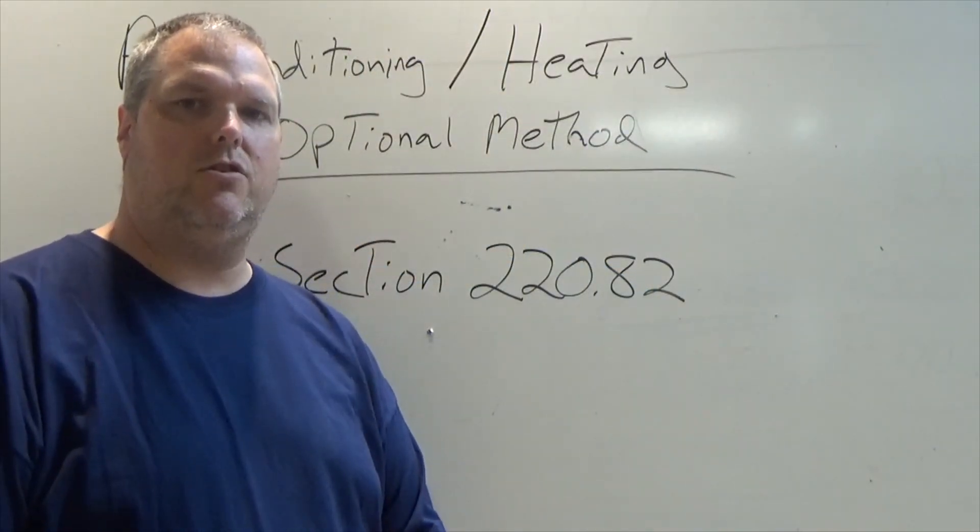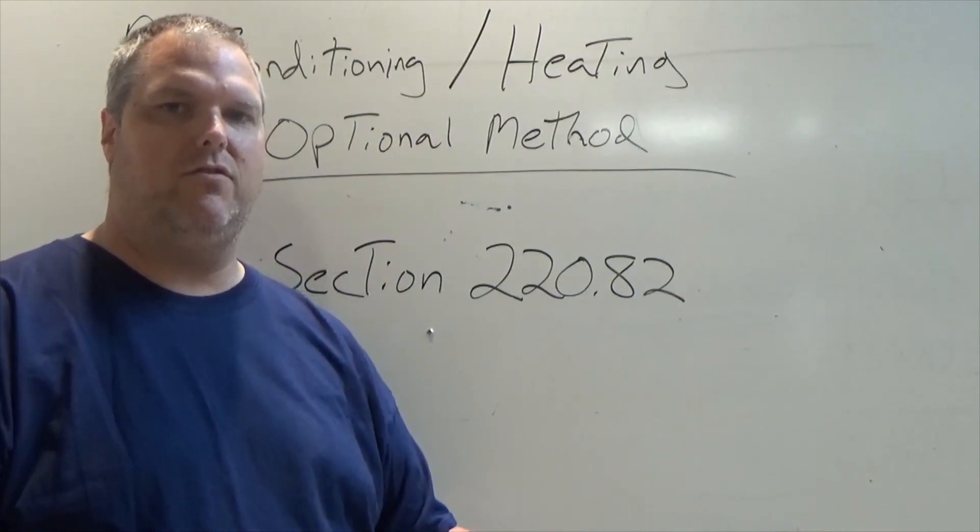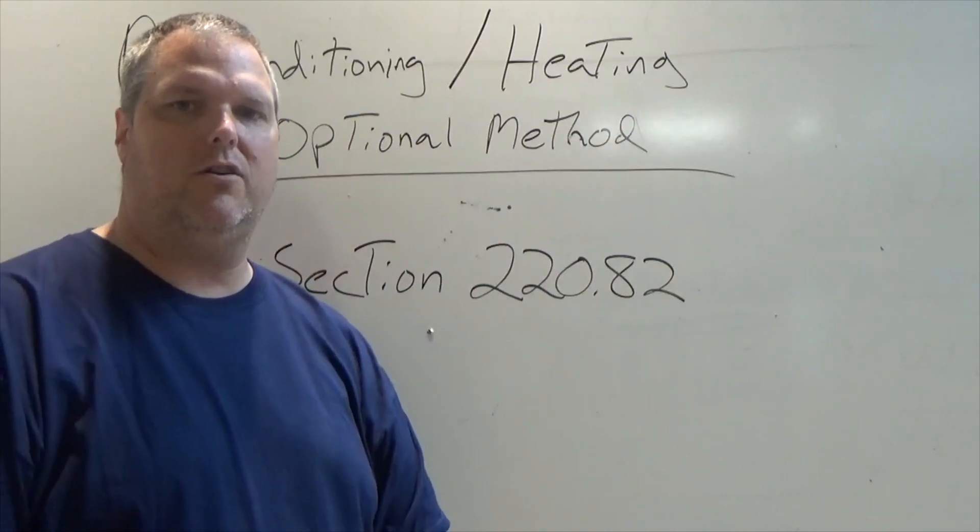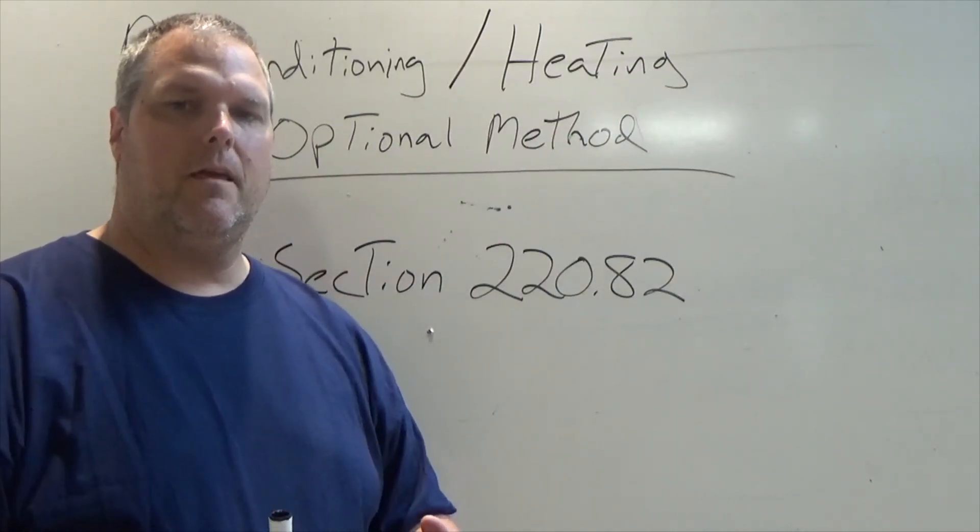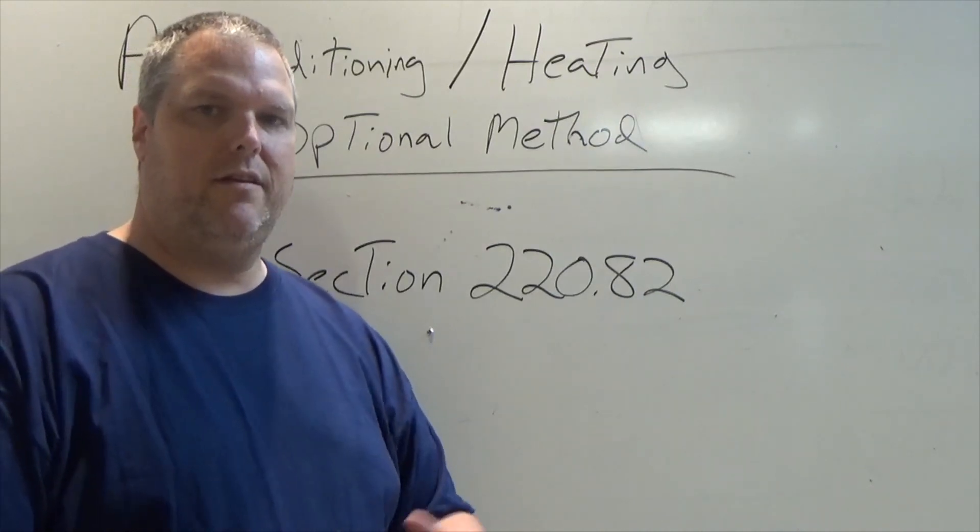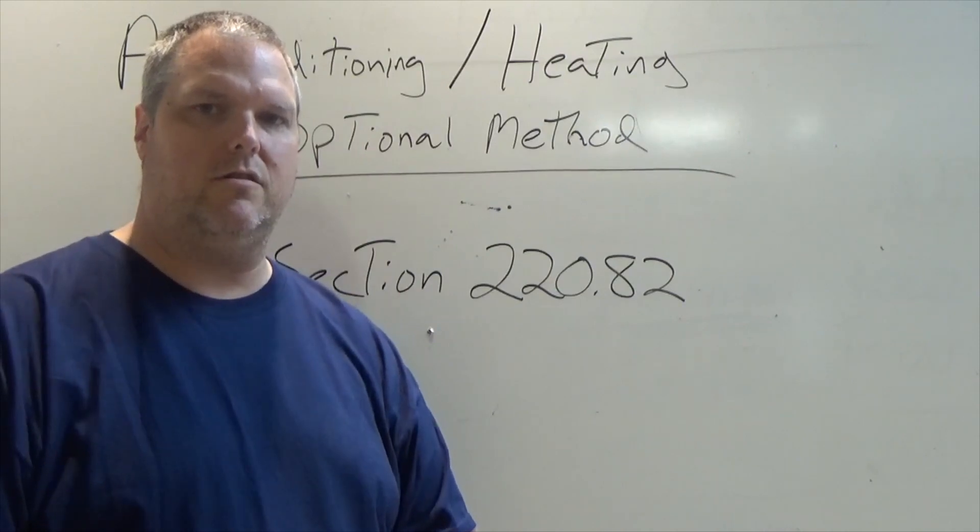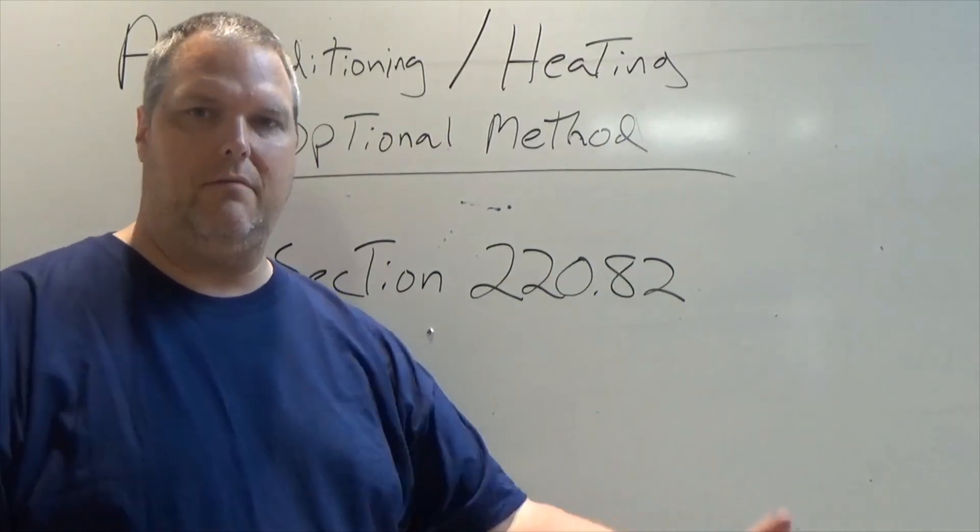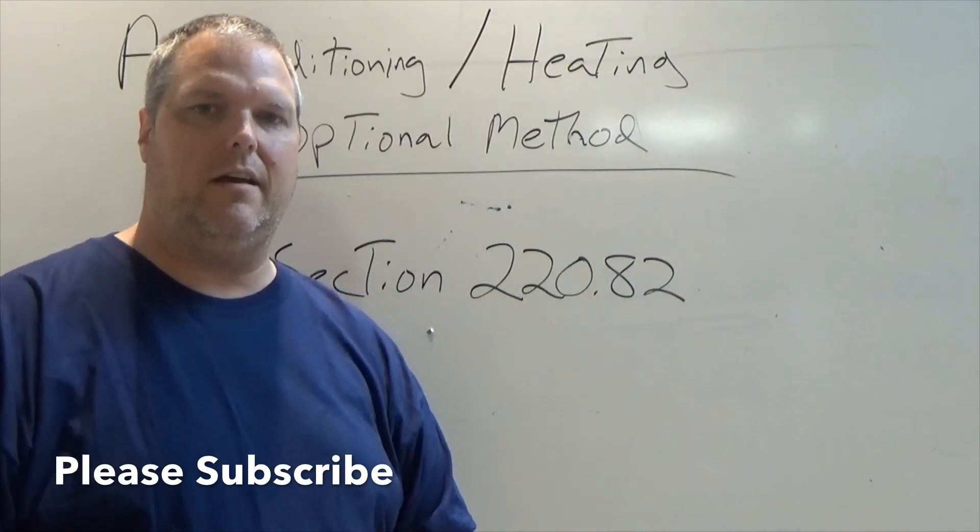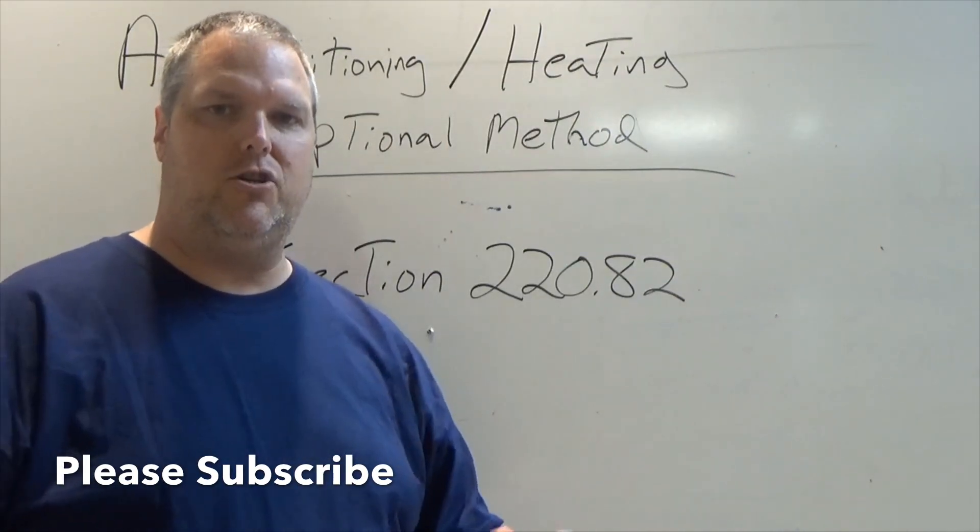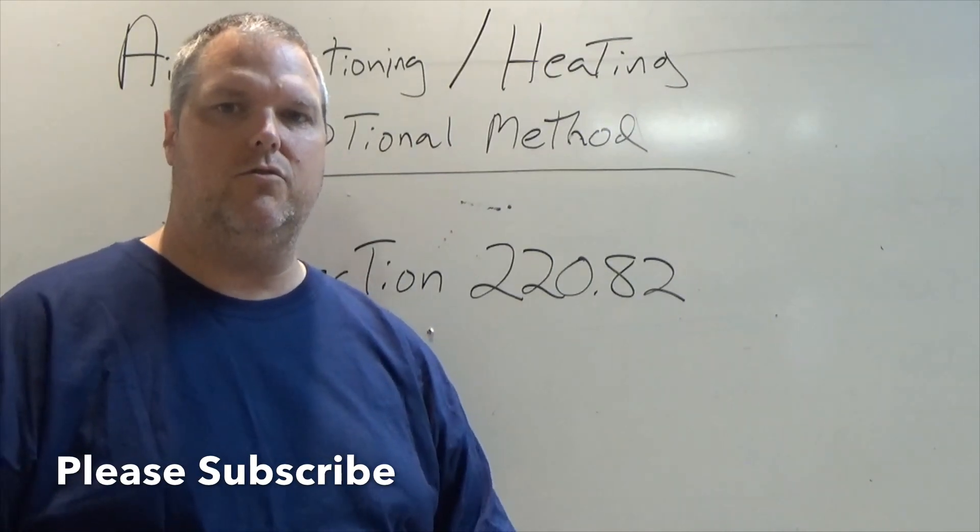Section 220.82 is what we're going to be discussing, the optional method. We talked about this in my first video. If you haven't seen it, click the link above, watch my first video showing you how to find general lighting demand. The optional method and the standard method are two different types of calculations. One is looking for more of a breakdown with a standard calculation. The optional method is basically taking our calculation, adding a bunch together, coming up with different demand factors, and then coming up with a different solution.